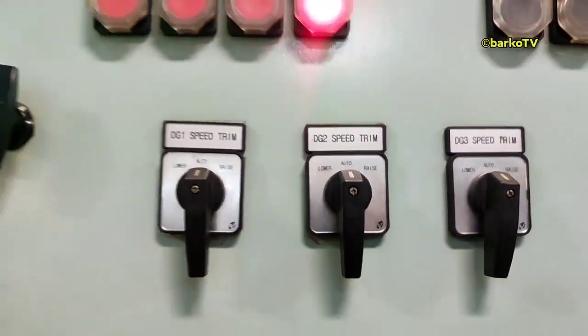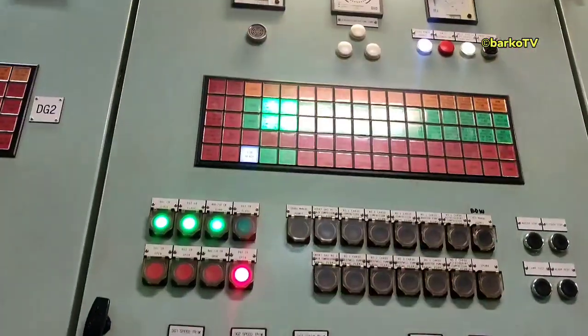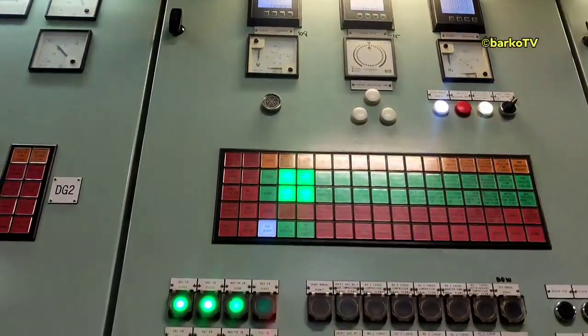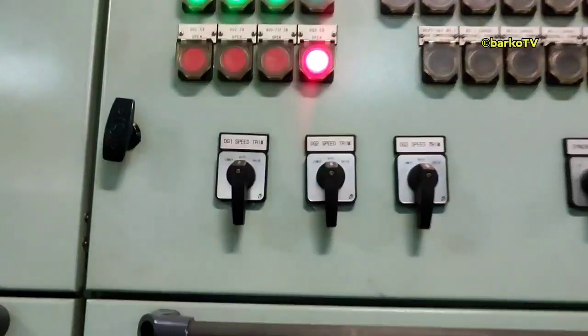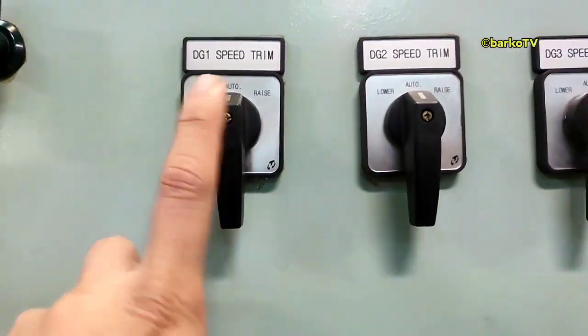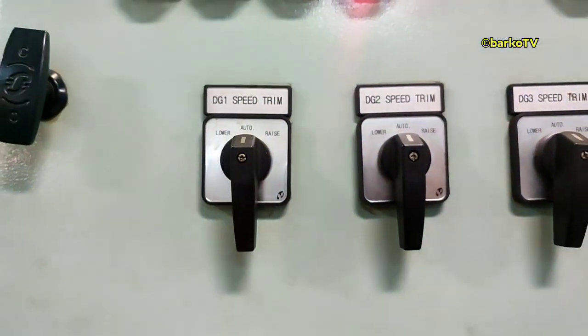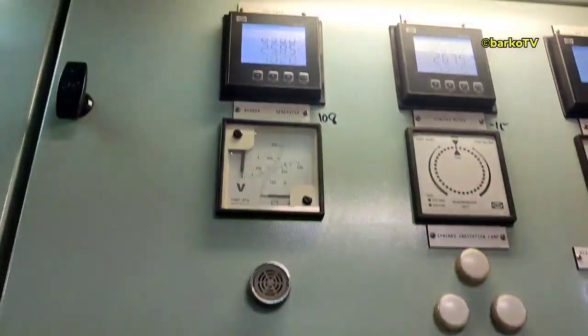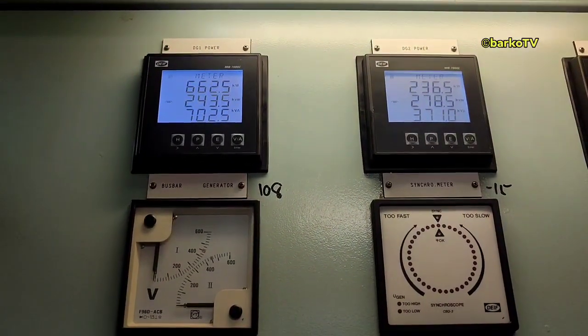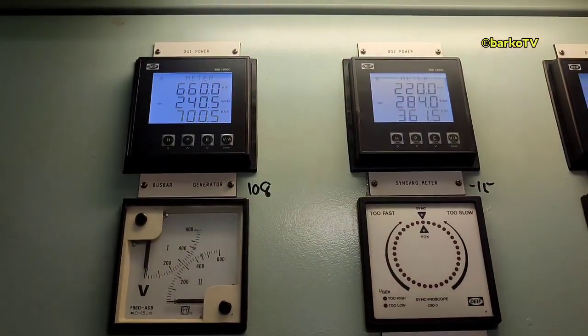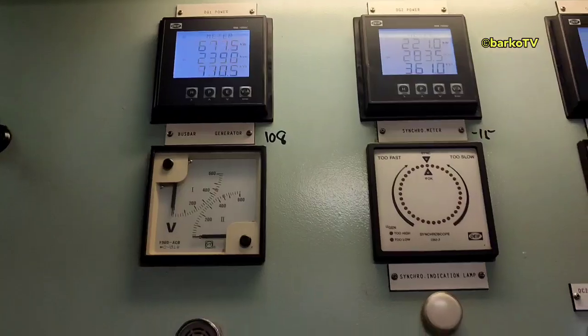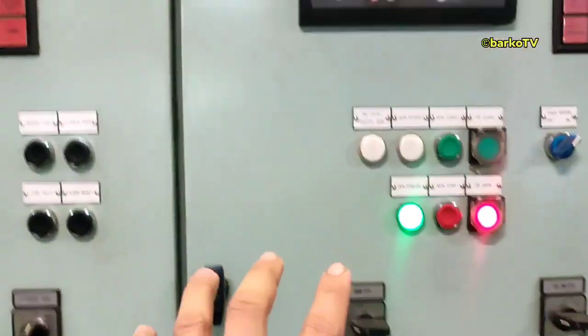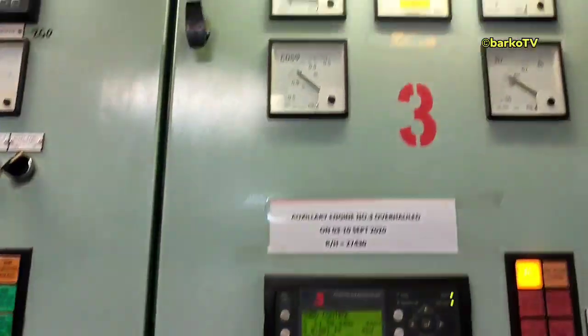If in auto, raise means you add more load to your generator, and lower means decreasing load. If two generators are synchronized manually, for example one and two synchronize with each other, but the mode is manual, if you raise number two, then number two will get the load from number one.